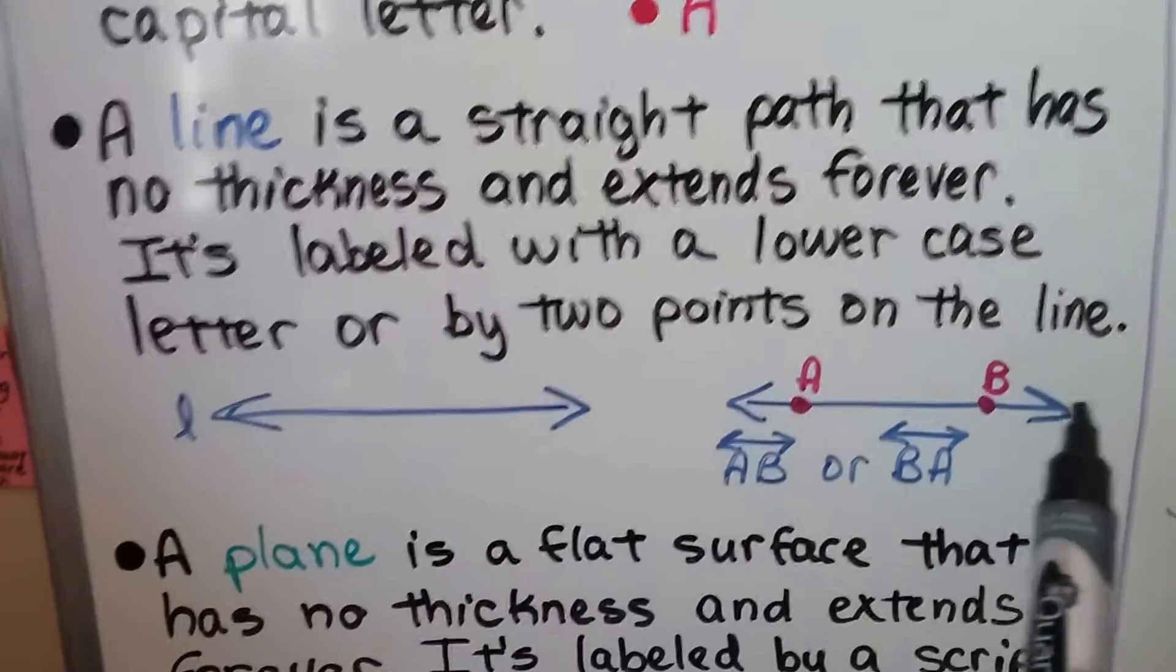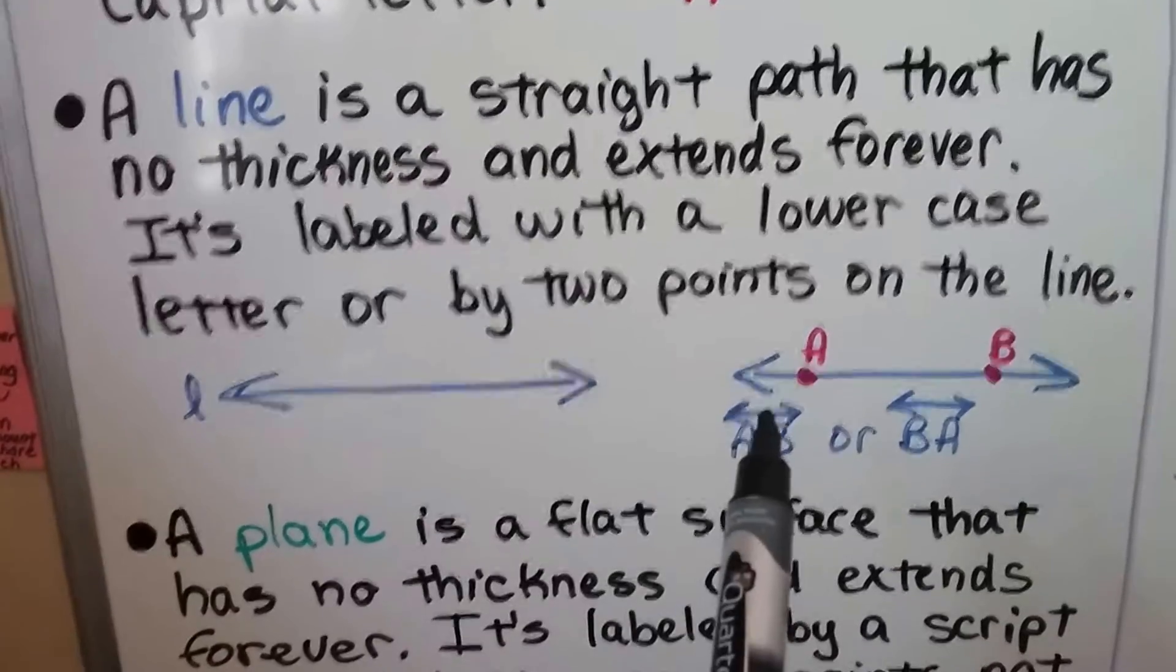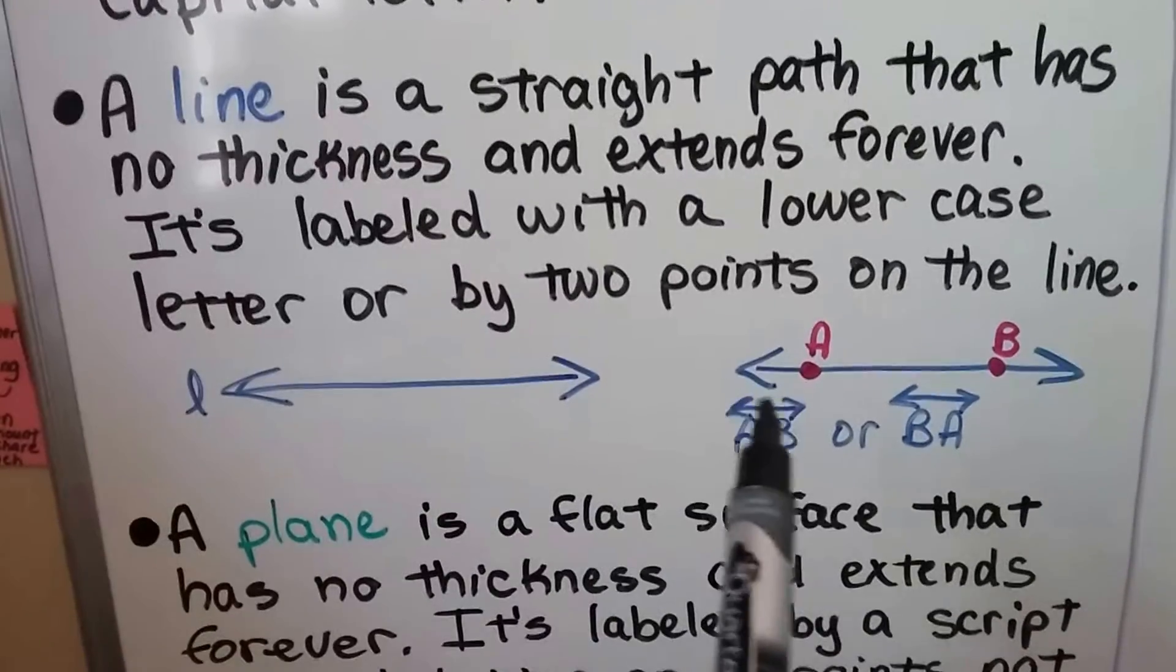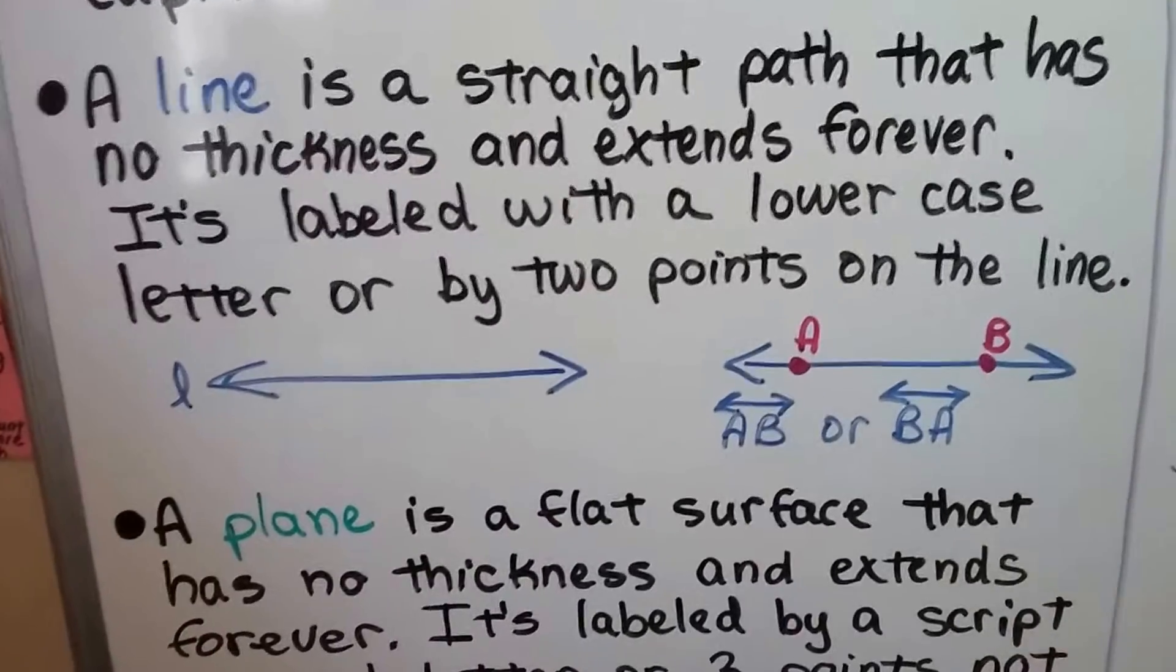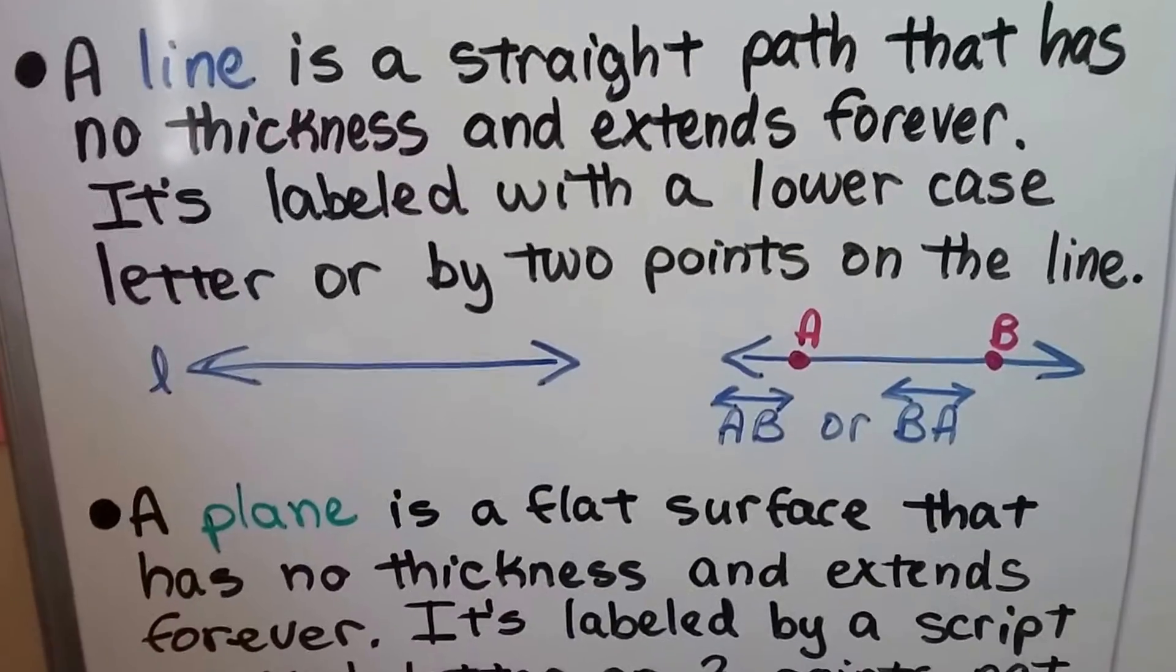It's got arrows pointing in both directions. And we can write AB with a line with arrows on both sides to say line AB or BA.